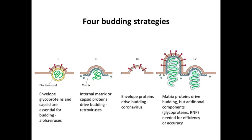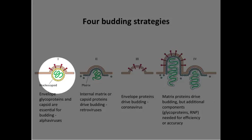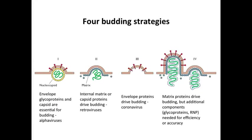There are a number of ways that viruses can bud. In some cases the glycoprotein and the capsid proteins drive budding, so you have to express both of them. In some cases the internal proteins are enough — you express a matrix protein and that will form a bud. In some cases the envelope proteins alone are sufficient; we talked about hepatitis B virus or influenza virus — you just express the envelope and that's enough to get a particle.